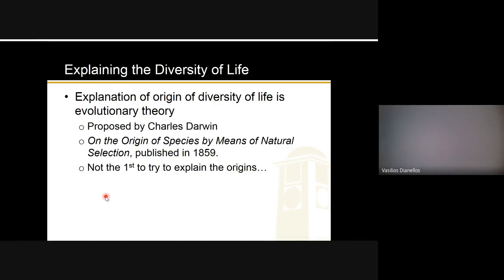The diversity of life — all the different species we have — is explained in biology through evolution. This evolutionary theory was proposed by Charles Darwin. You should know that name; it will come up again. He proposed it in his book called On the Origin of Species by Means of Natural Selection, published in 1859. It would be handy to know the name of the book, but I'm not going to ask you on the exam since this isn't a history class. It is probably one of the most important books in biology.